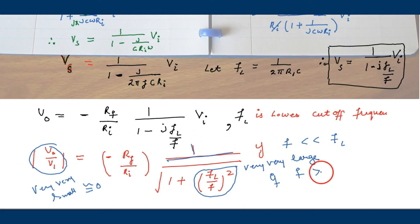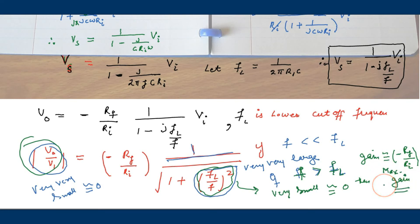Let's think other way. If f is greater than fl, then fl upon f becomes very small. And 1 upon small quantity, that becomes very large. If fl upon f becomes so small, approximately zero, the gain modifies to just the gain of inverting op-amp.